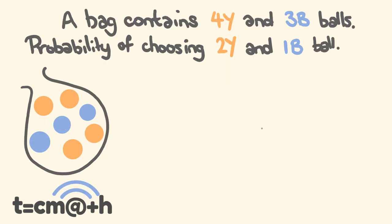The very first question we have is this one. A bag contains four yellow and three blue balls. What is the probability of choosing two yellow and one blue ball out of that? So we're going to be choosing three balls, trying to choose two yellow and one blue and see what the probability is.